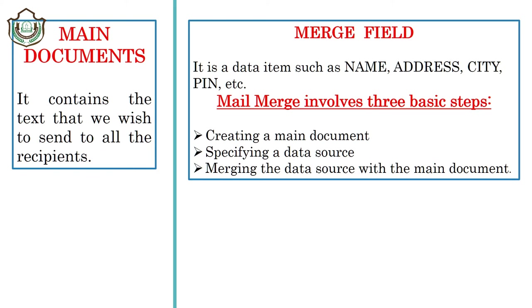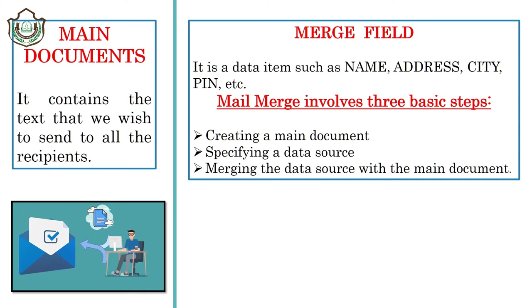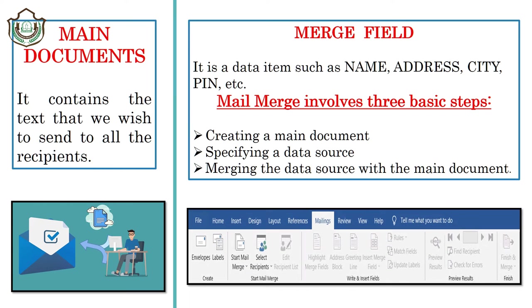Mail merge involves basically three basic steps. Number one is creating a main document, number two is specifying a data source, and number three is merging the data source with the main document.